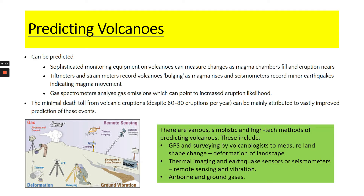Various methods used by volcanologists include GPS and satellite imagery to survey land shape change and deformation of the landscape. We can use thermal imaging to look at heat, and earthquake sensors and seismometers for remote sensing and vibration. We can also look at airborne and ground gases to see if there is any change. So volcanoes can be predicted.